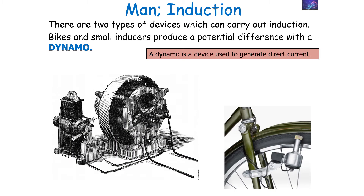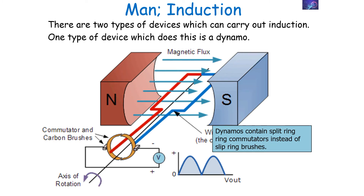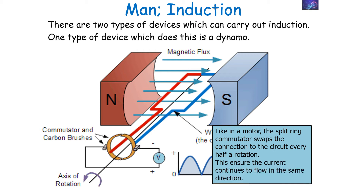The second type of device which can carry out induction is a dynamo. A dynamo is a device used to generate direct current. Like the generator, dynamos use the induction effect to induce potential difference, but dynamos contain split ring commutators instead of the slip ring brushes that an alternator has. Like in a motor, the split ring commutator swaps the connection to the circuit every half a rotation, ensuring that the current flows in the same direction throughout, so the dynamo produces direct current.